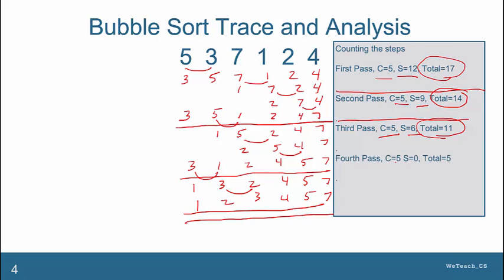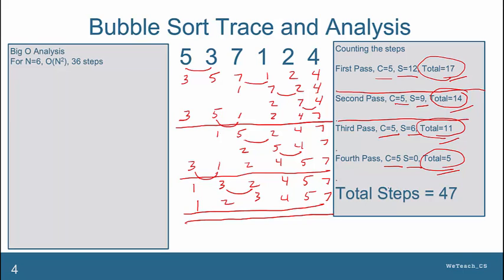This double line here is a good indication that we have a clear pass. So the final pass still had a cost of five but there were zero swaps. So the total cost was simply five. We add these up: 17 and 14 make 31 plus 11 is 42 plus 5 is 47. So the total cost here is 47.